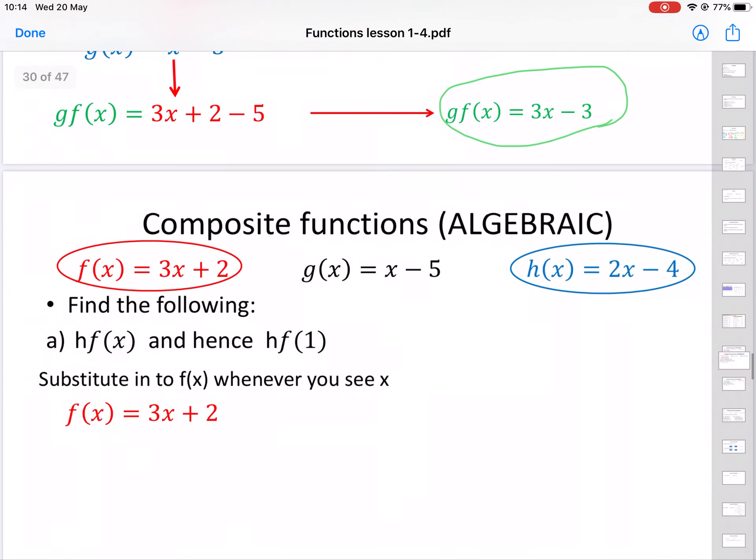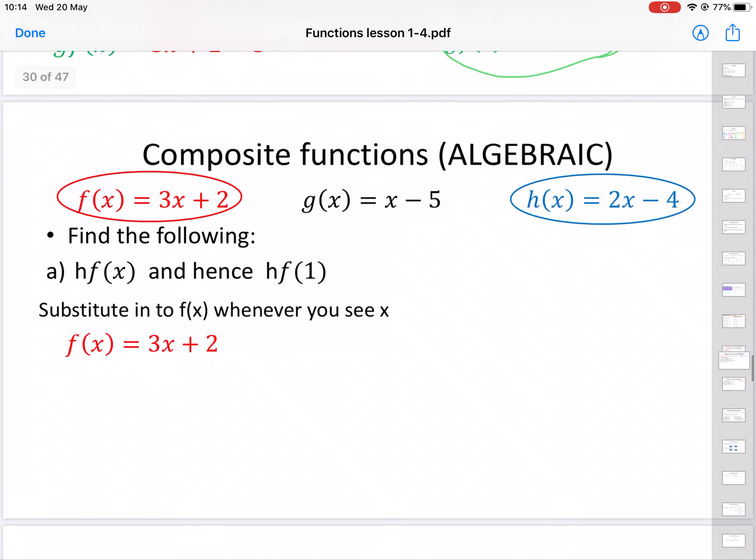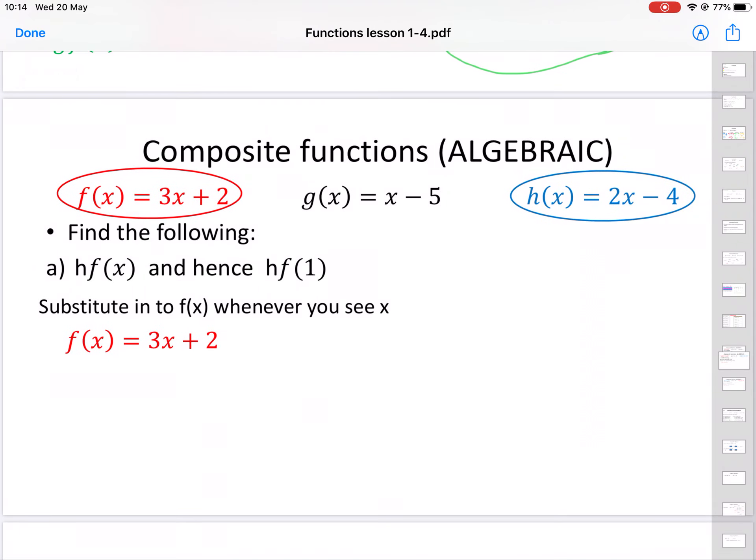Let's have a look at another one, because they do get a bit trickier. Find the following: hf(x) this time. Again, we're still starting with f, but this time we're putting it into the h function. Now if we look at the h function, it's h(x) = 2x - 4. Don't forget, this whole f function here is going to go in place of the x value in our h function.